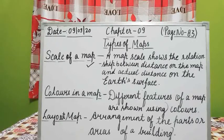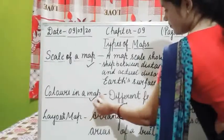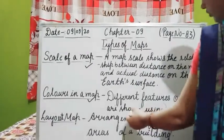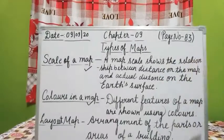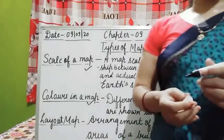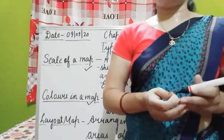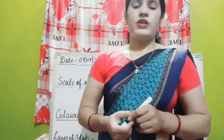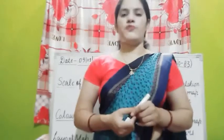Your next topic is colors in a map. Different features of a map are shown using different colors. For example, brown is used for showing mountains, blue is used for showing water bodies, and green is used for showing forests and green lands.